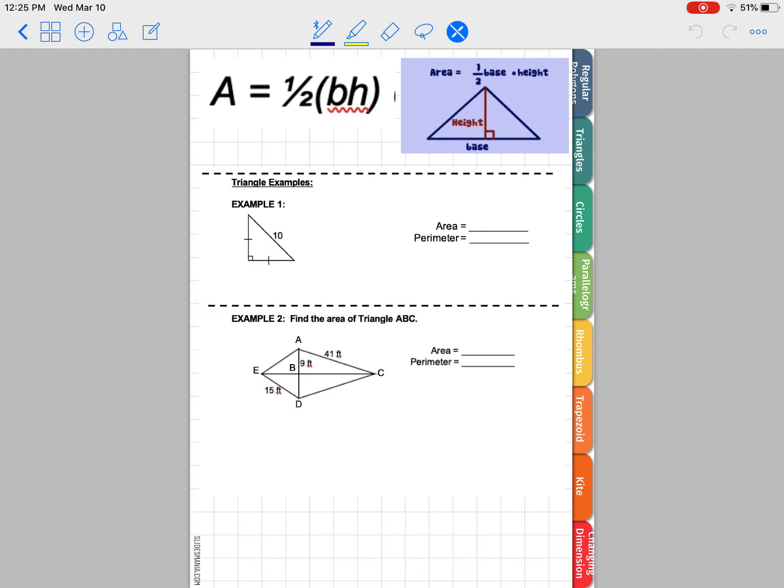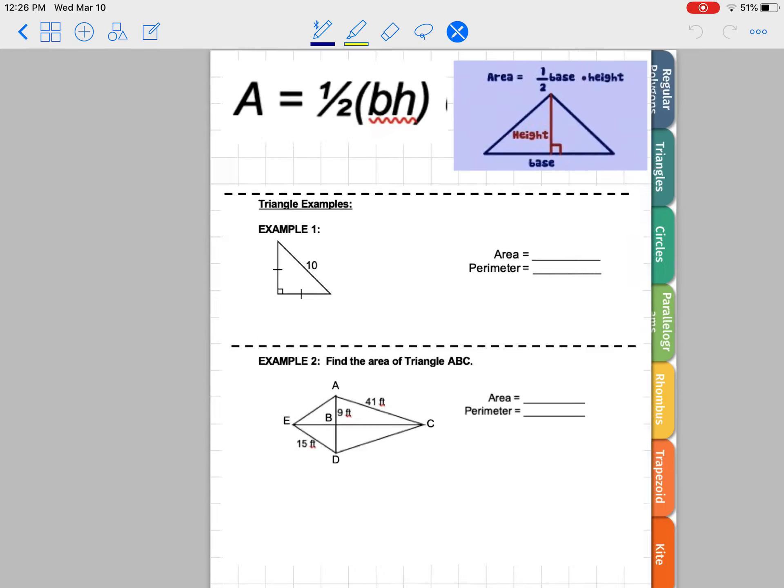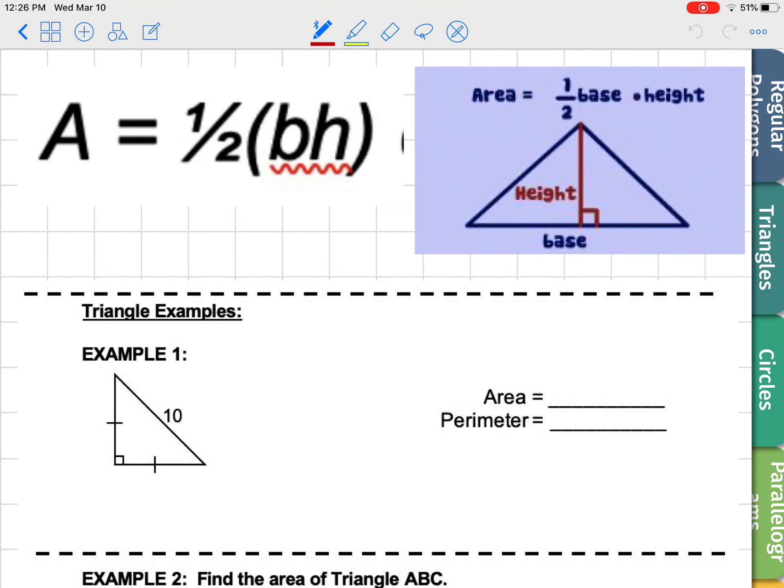The formula is up there at the top. Area equals one half, the B stands for base, and the H stands for height. So if you need to write that down, B stands for base, and H stands for height.